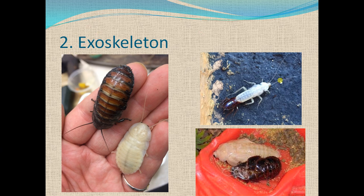The second skeleton is called the exoskeleton. 'Exo' means outside, so this kind of skeleton is present outside the body. This skeleton is common in insects and most invertebrates. This skeleton is made of a material called chitin. It protects the body and also works as a waterproof covering.